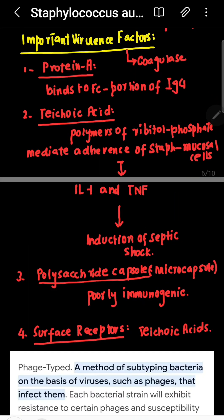The most important virulence factor is protein A. It binds to the Fc portion of IgG antibody, preventing phagocytosis because the gamma heavy chain cannot bind to receptors on neutrophils and macrophages. Therefore, neutrophils and macrophages cannot act. There is no vaccine available for Staph aureus; hand washing reduces transmission.